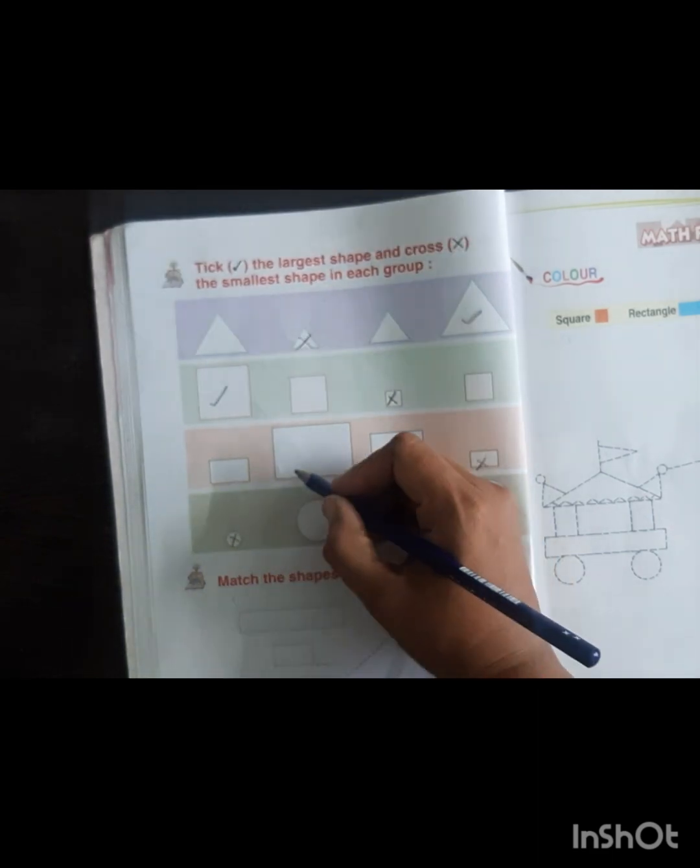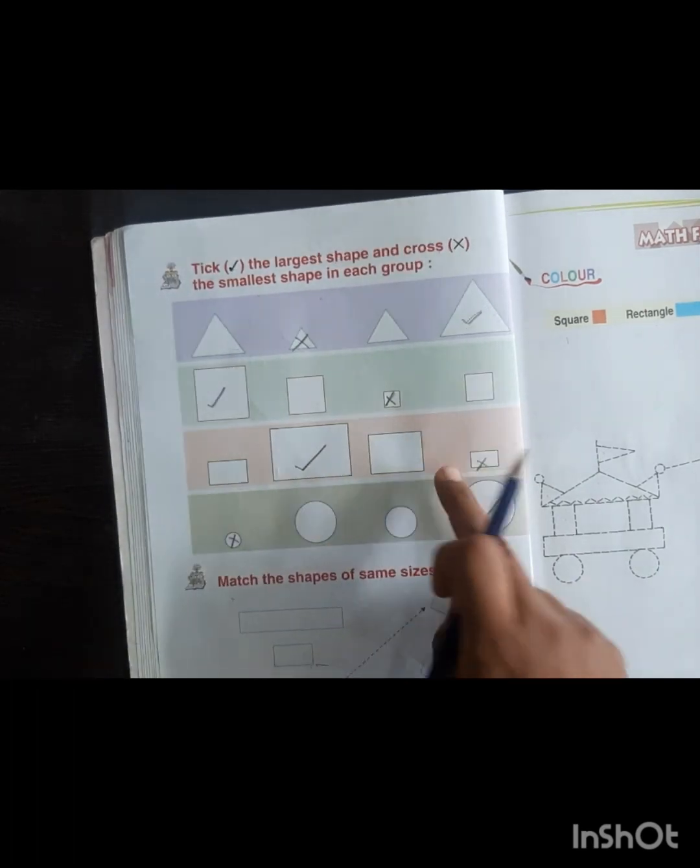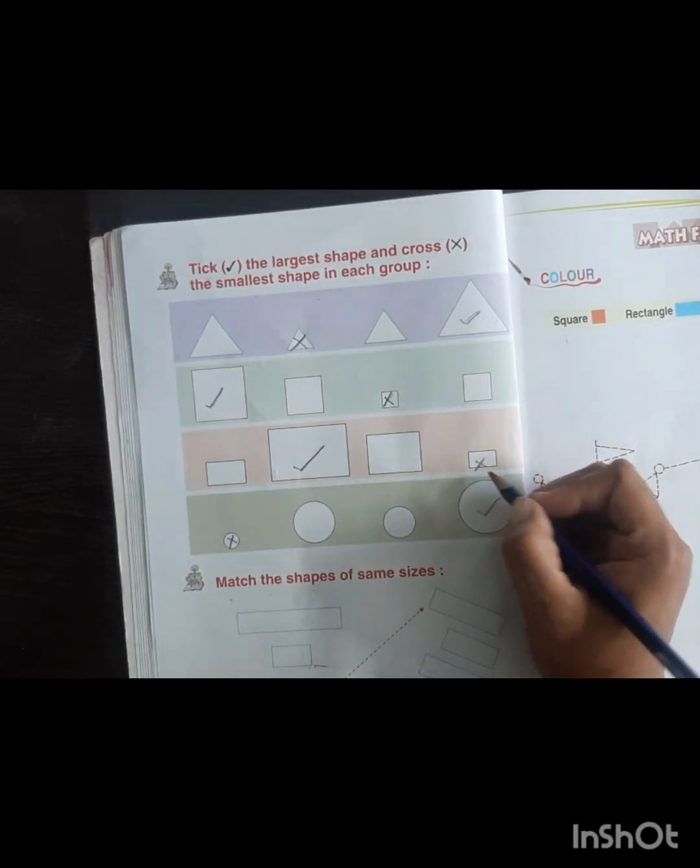These are rectangles. This is the largest rectangle, so we tick it. And smallest, this is smallest, so we will cross it.